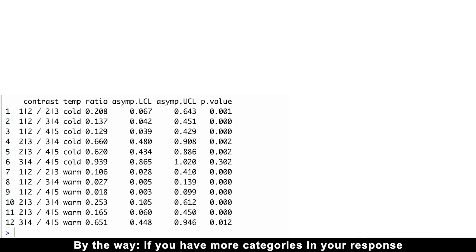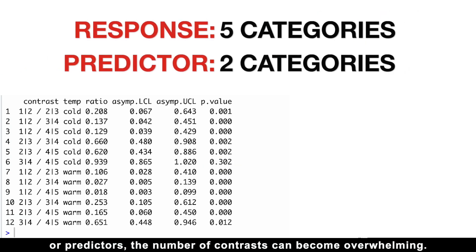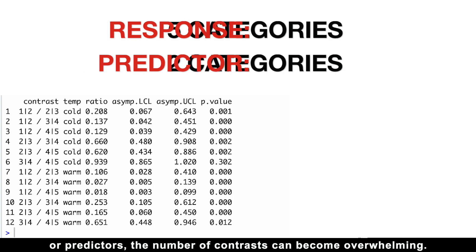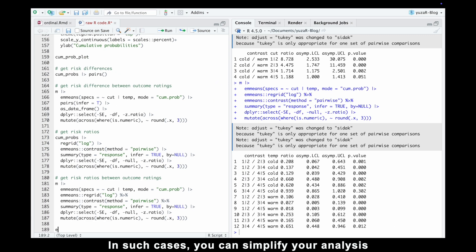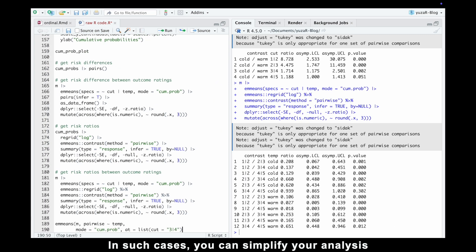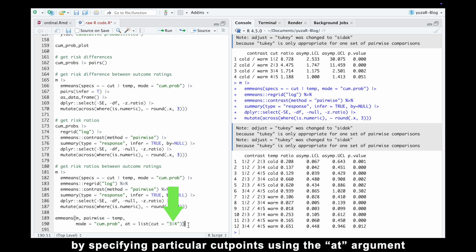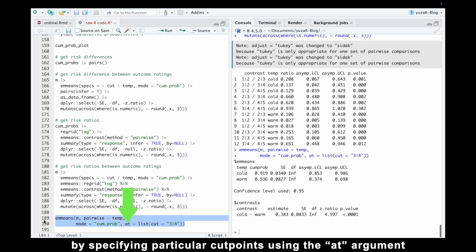By the way, if you have more categories in your response or predictors, the number of contrasts can become overwhelming. In such cases, you can simplify your analysis by specifying particular cut points using the at argument in the emmeans function.